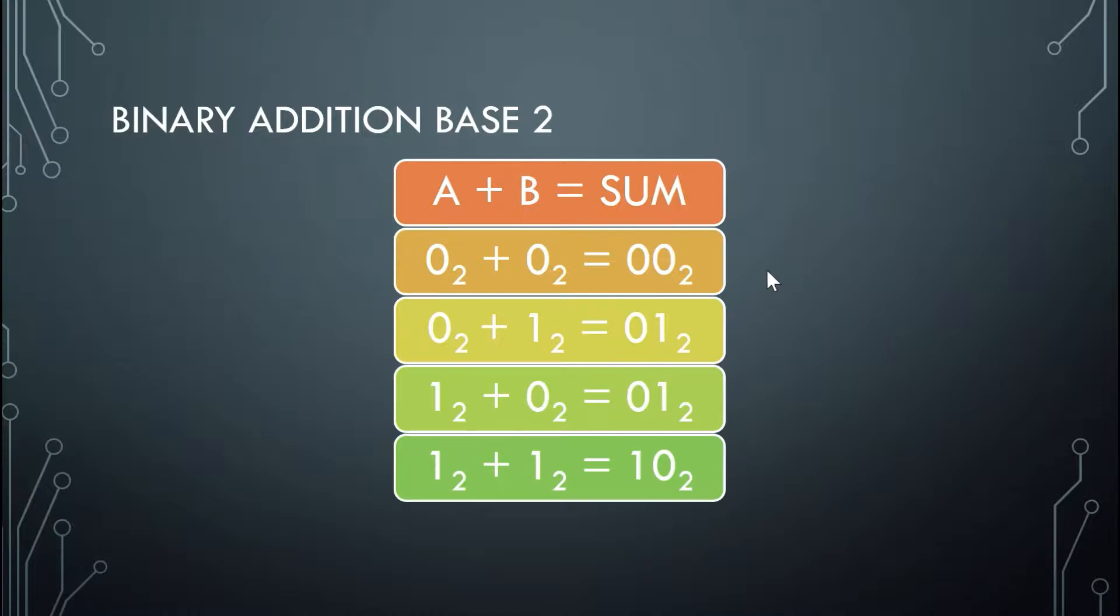As you can see in base 2, 0 plus 0 is 0, 0 plus 1 is 1, 1 plus 0 is 1, and 1 plus 1 is 10, which equates to 2 in base 10.